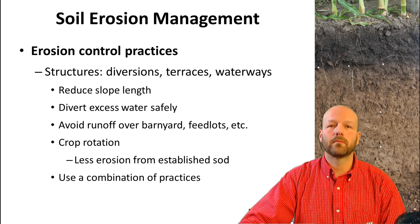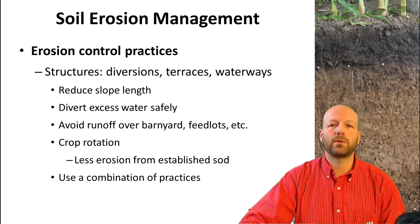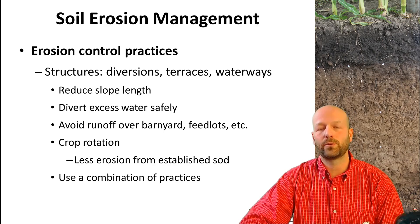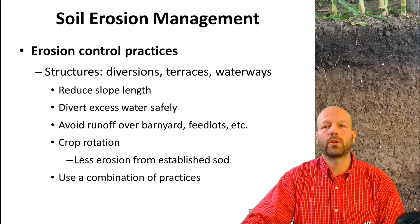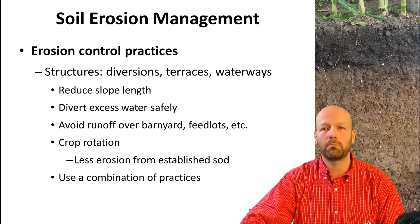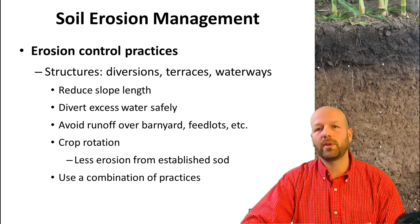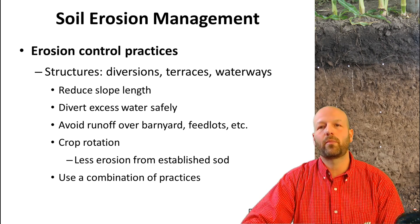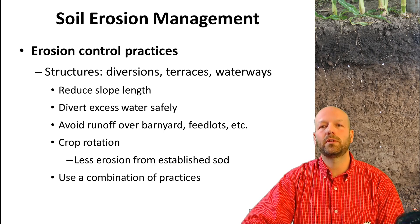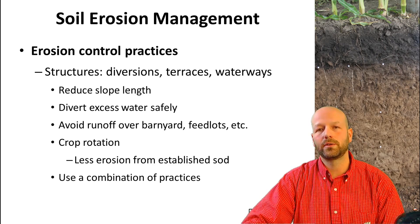Another way to improve erosion management is to avoid runoff on feedlots or barnyards, where the area is compacted and has very poor infiltration, so more water moves out of those areas. Crop rotations can also be important — including a crop with a lot of residue or a different root structure will help hold soil in place. Ultimately, the best way to control erosion is a combination of practices: reducing tillage, including residue management, cover crops, and contour cropping on steep slopes. As a whole package, these can be very effective in reducing erosion.